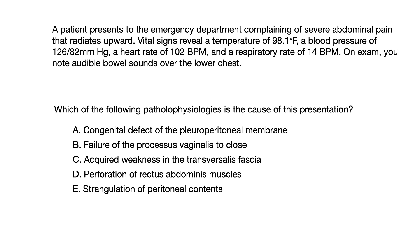A: congenital defect of the pleuroperitoneal membrane. B: failure of the processus vaginalis to close. C: acquired weakness in the transversalis fascia. D: perforation of rectus abdominis muscles. Or E: strangulation of peritoneal contents.